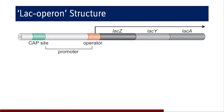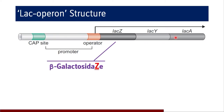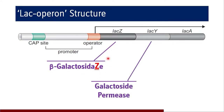These genes Z, Y, and A transcribe to form a single large polycistronic mRNA with three independent translation units for the synthesis of three distinct enzymes. The first gene, lac Z, is transcribed for beta-galactosidase.